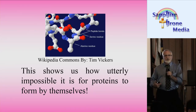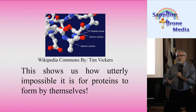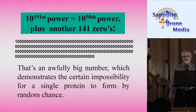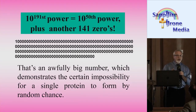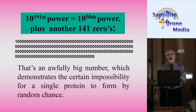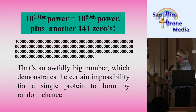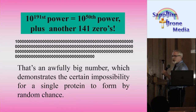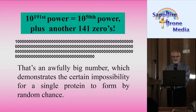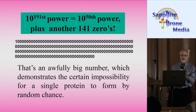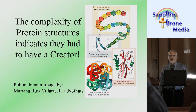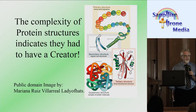Scientists have tried to do experiments to create proteins, to create life and things of this nature. They've never done it. 10 to the 191st power is 10 to the 50th power plus another 141 zeros. That's an awfully big number, which demonstrates the certain impossibility for a single protein to form by random chance. The complexity of protein structures indicates that they had to have a creator.